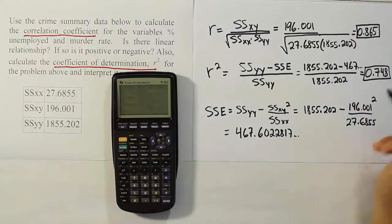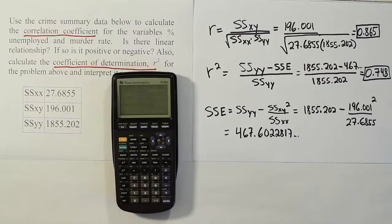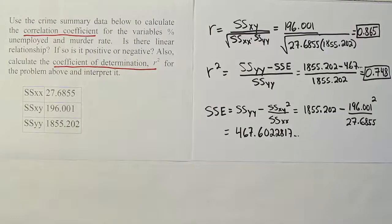So roughly 75% of the variation found in y can be attributed to the inclusion of x in our linear regression model. X accounts for roughly 75% of the total sample variability in our y variable, meaning x has a very important role in predicting y. In this case, x is the percent unemployment, so the unemployment rate has meaningful predicting ability for the murder rate.